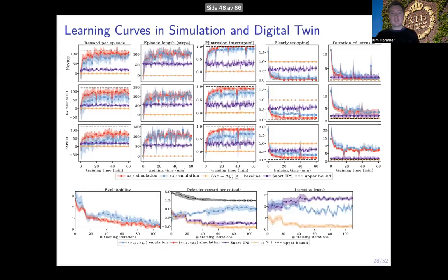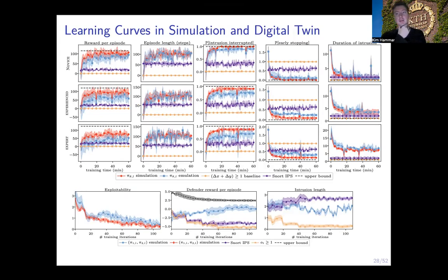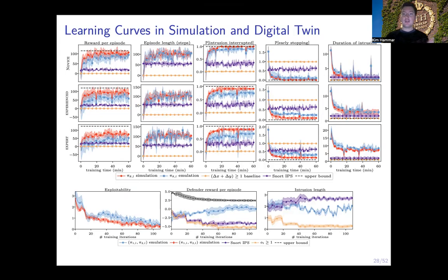Here are the corresponding validation results on the twin. You should focus on the red and blue curves: the red curve shows performance in simulation and the blue one shows performance on the twin. In general, performance is a little bit better in simulation as expected, so there's a small gap. But that gap is not large, and most importantly the blue curve is strongly correlated with the red curve, suggesting that strategies learned in simulation transfer their performance to the digital twin — giving us confidence they will also transfer to the target infrastructure.